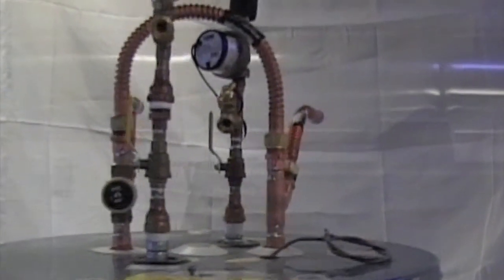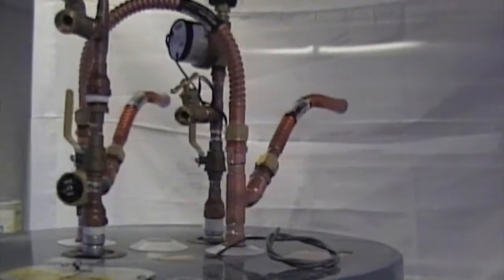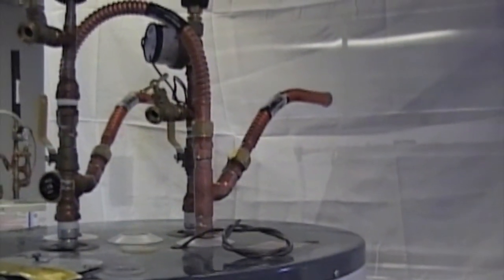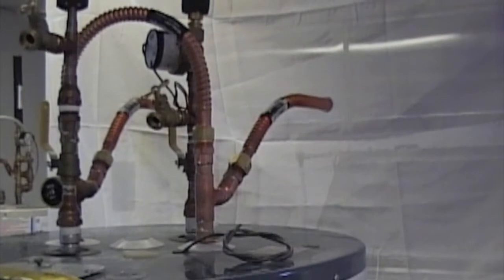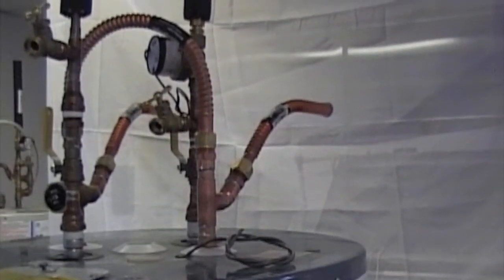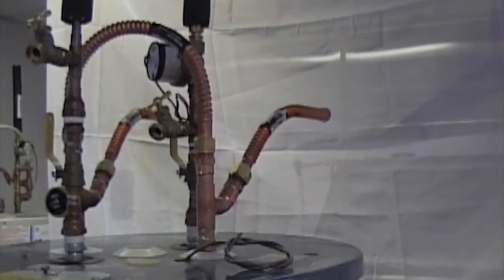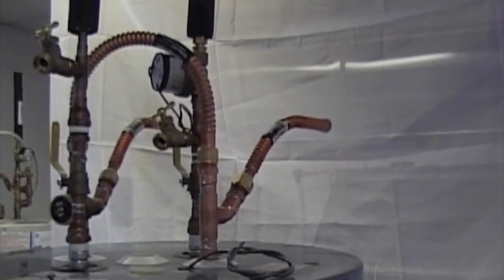As you can see you have a return from the collectors and a feed to the collectors with a pump. Each one has a hose bib and the return for the collectors has a check valve to prevent reverse thermal siphoning. It's a floating ball check valve with zero resistance.